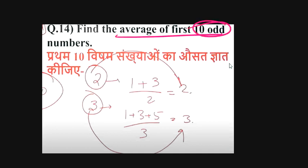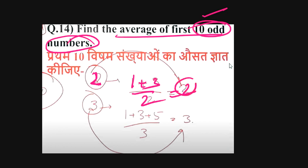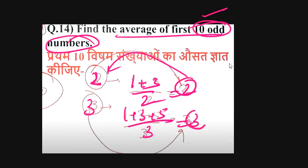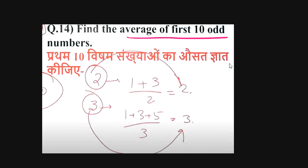If you ask the average of the first 10 odd numbers, the average of the first N odd numbers is equal to N. For example, the first 2 odd numbers: 1 plus 3 divided by 2 equals 2, which is the number. First 3 odd numbers: 1 plus 3 plus 5 divided by 3 equals 3. So the average of the first 10 odd numbers is 10.